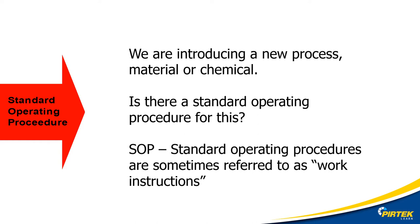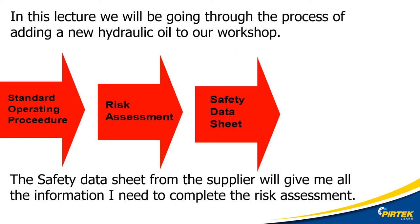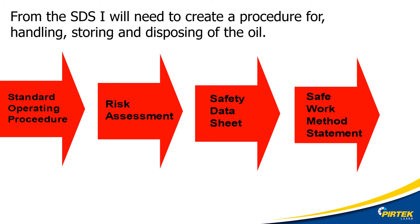First thing: is there an SOP Standard Operating Procedure document for this activity? My first stop would be P-Connect, or ask my supervisor if this document was available. I have checked the SOP and it specifies that I need to create a risk assessment when adding a new substance to the workshop. The safety data sheet from the supplier will provide most of the information I need to complete the risk assessment. There is a fair bit of handling and manipulation of the oil, so looks like we're going to need a SWMS document, or a safe work method statement. This will provide instructions on lifting, decanting, storage and dealing with spillage of the oil.